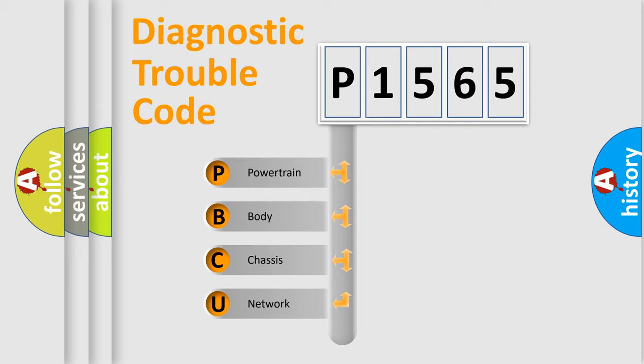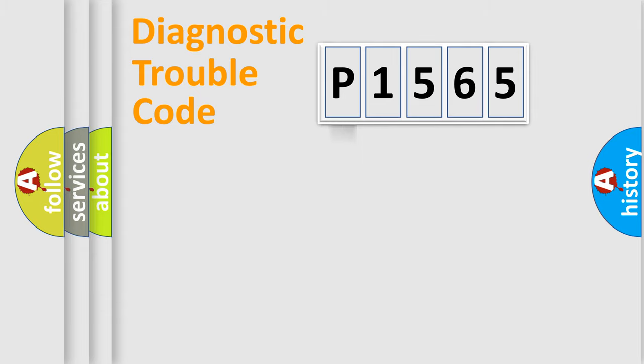We divide the electric system of automobile into four basic units: Powertrain, body, chassis, network. This distribution is defined in the first character code.